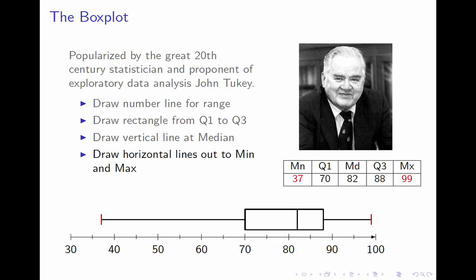Finally, we draw a horizontal line from Q3 all the way up to the max, in this case 99, and from Q1 all the way down to the min at 37. And usually we draw short vertical lines to sort of cap it off. That's the box plot. It's also sometimes called box and whiskers plot, which I don't like because the image of my whiskers looking like this is unsettling to me.